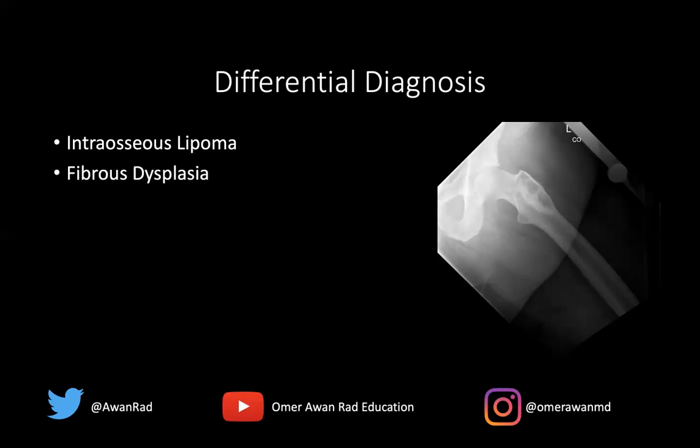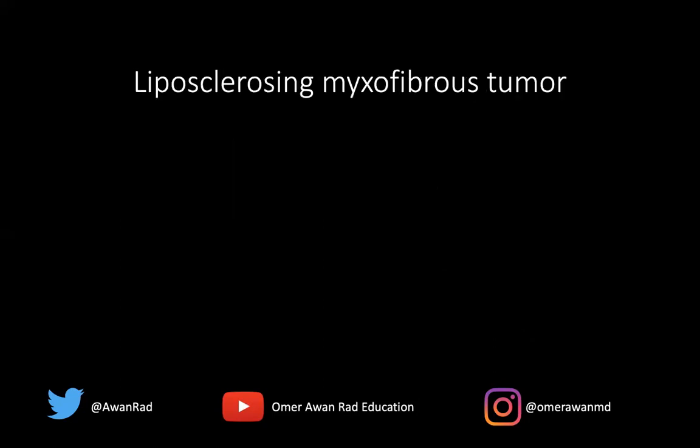Fibrous dysplasia would be a consideration if you felt that this was ground glass matrix mineralization. You wouldn't expect sclerotic margins with fibrous dysplasia, but certainly you could have ground glass matrix mineralization and a heterogeneous area of lucency and sclerosis. But the best answer here is a liposclerosing myxofibrous tumor for the reasons we discussed.